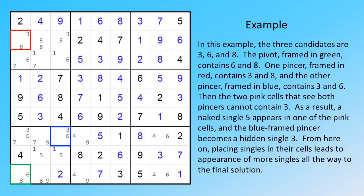In this example, the three candidates are 3, 6, and 8. The pivot, framed in green, contains 6 and 8. One pincer, framed in red, contains 3 and 8, and the other pincer, framed in blue, contains 3 and 6.